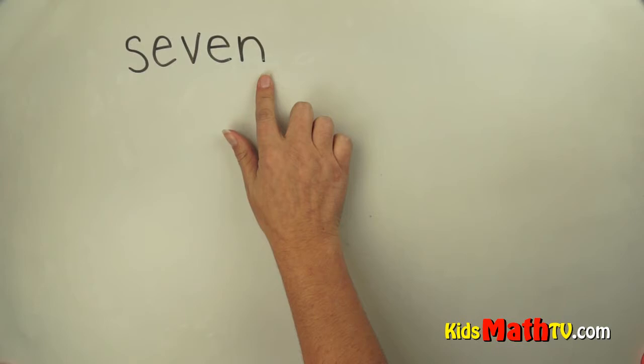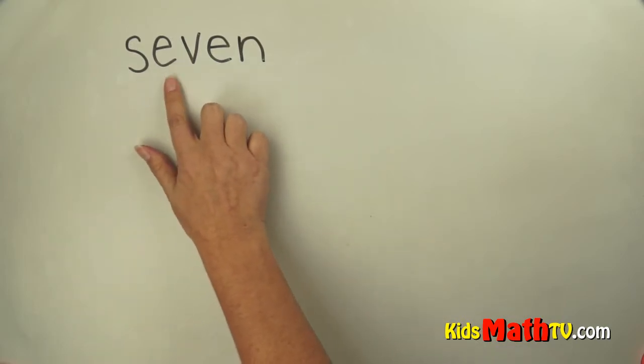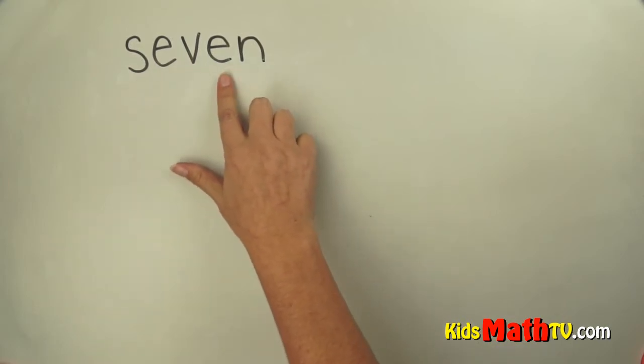In this lesson you will learn about the number seven. Seven is spelled S-E-V-E-N and seven represents seven things.